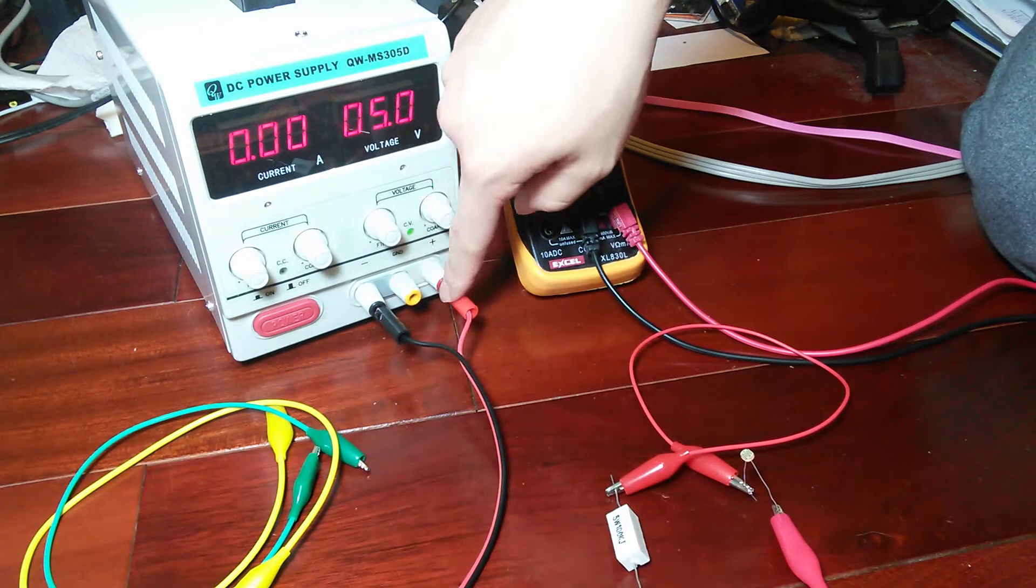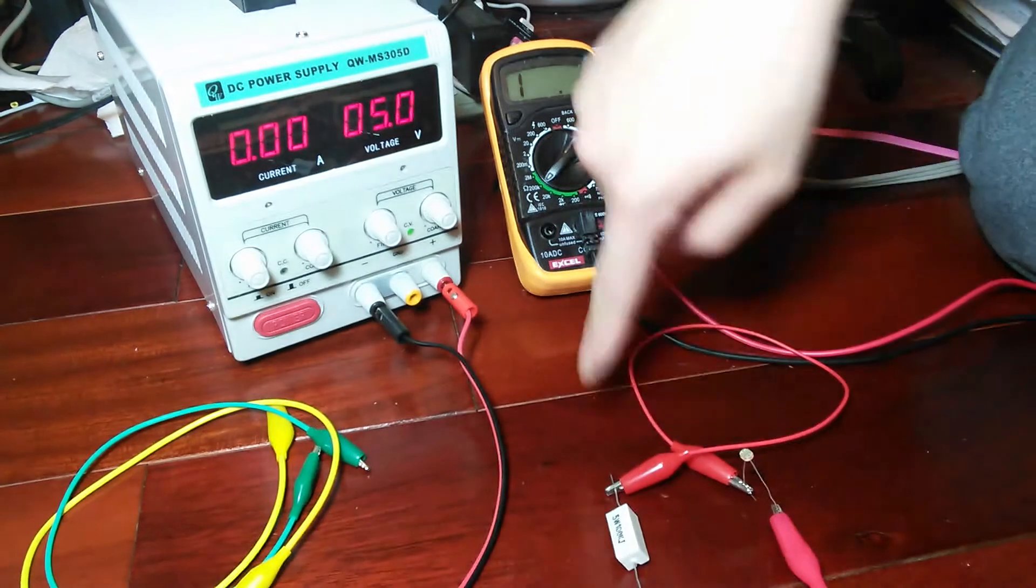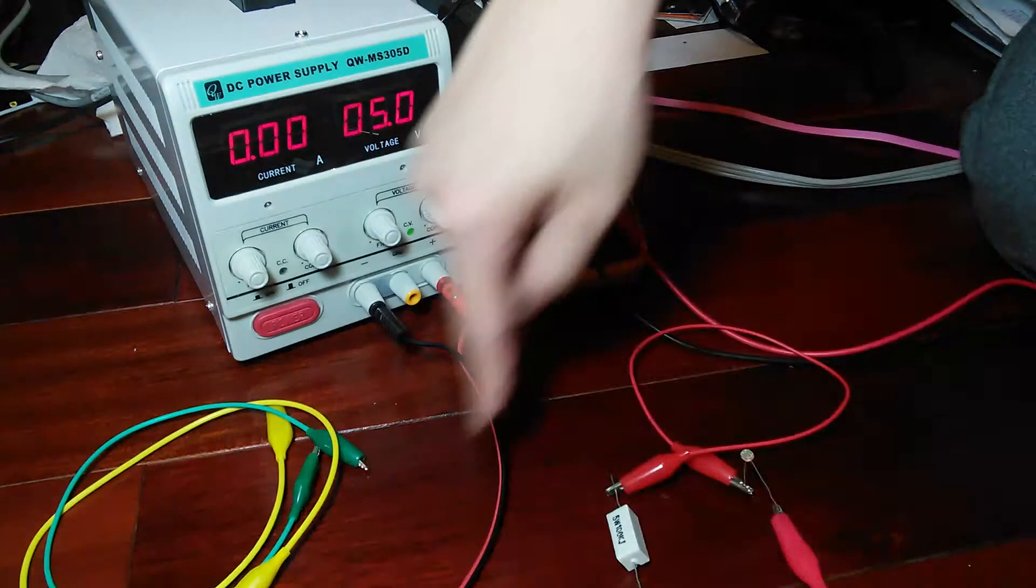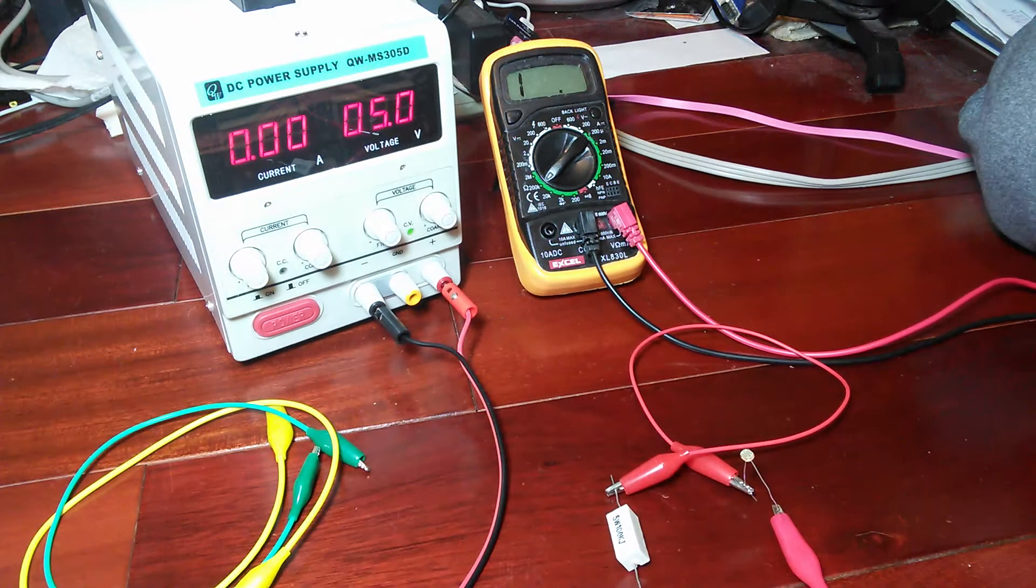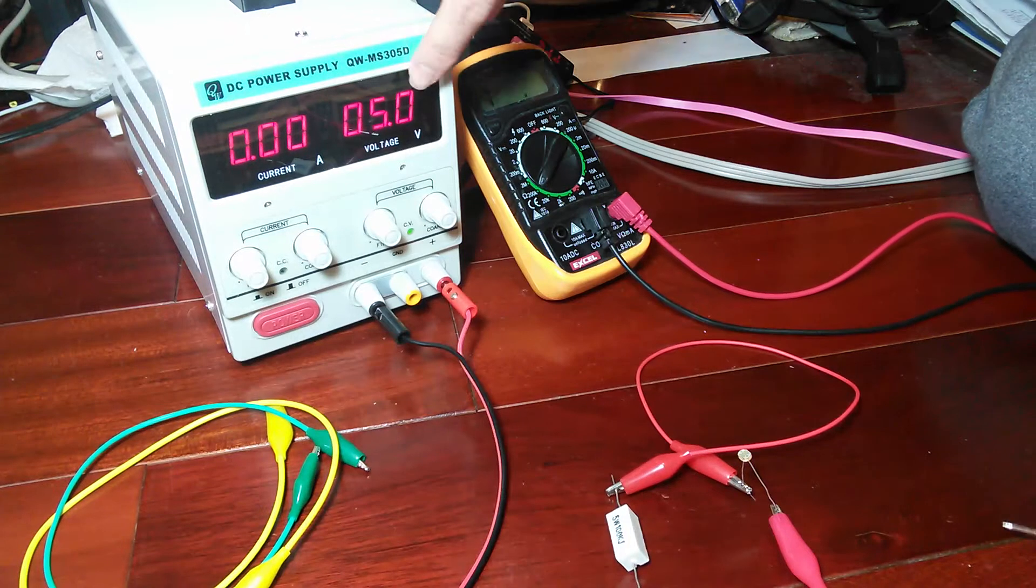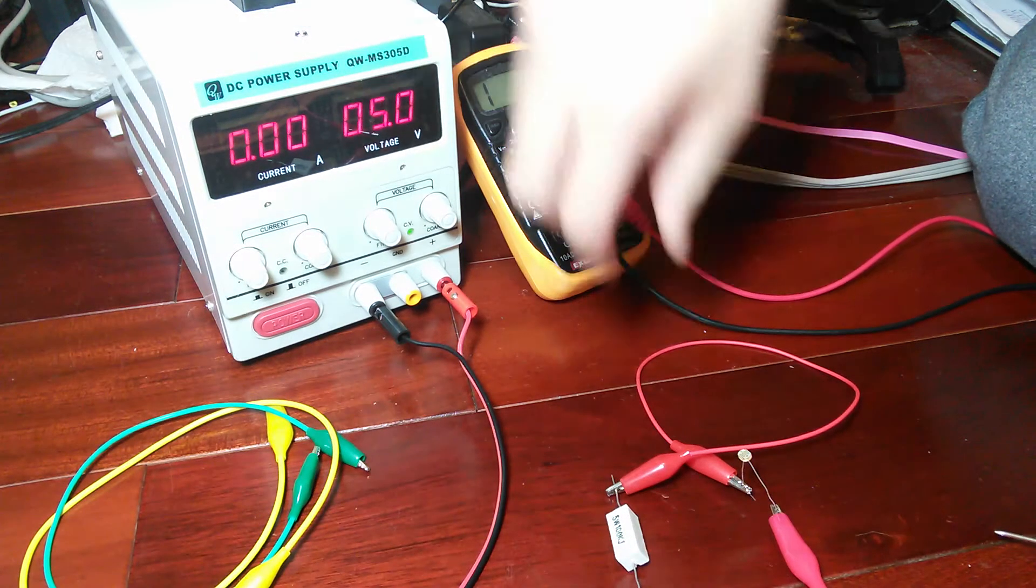Now, the electricity goes from the supply through this resistor and then through this resistor and then back. So together, they must be dropping 5 volts total.